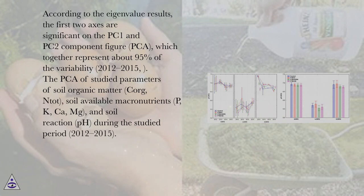The PCA analyzed studied parameters from 2012 to 2015: soil organic matter (CORG, NTOT), soil available macronutrients (P, K, Ca, Mg), and soil reaction (pH) during the studied period.